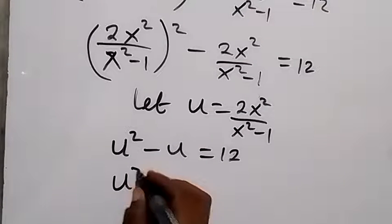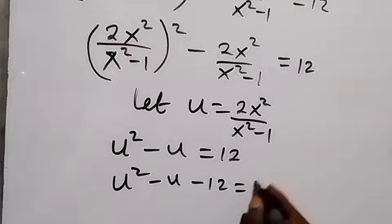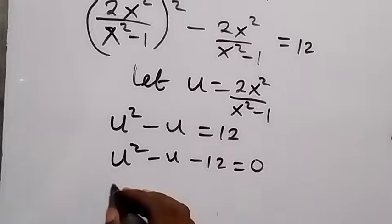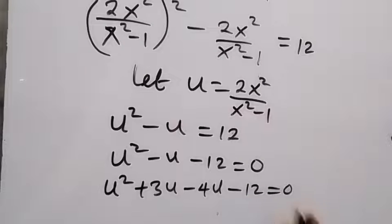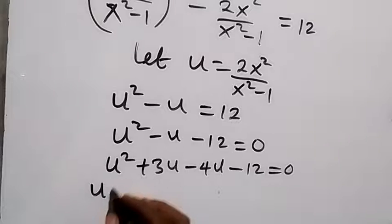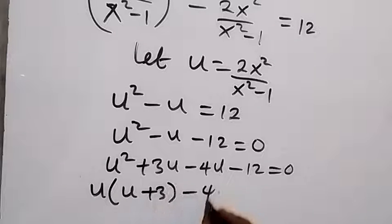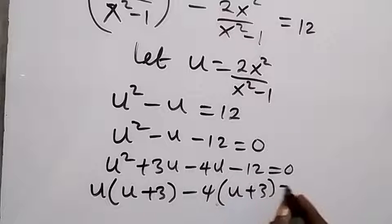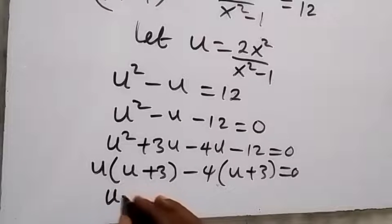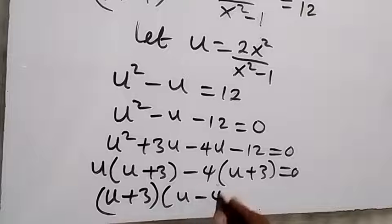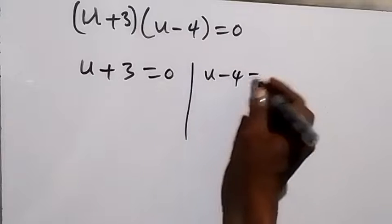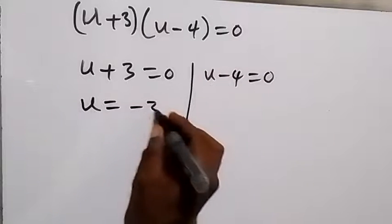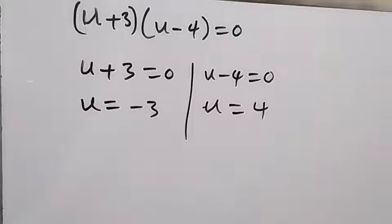Taking 12 to this side, this becomes u squared minus u minus 12 equals zero. Factorizing: u squared plus 3u minus 4u minus 12 equals zero. What is common between the first two terms is u, so u(u+3), and from the last two terms minus 4(u+3) equals zero. So (u+3)(u-4) equals zero, giving two cases: u plus 3 equals zero, and u minus 4 equals zero.